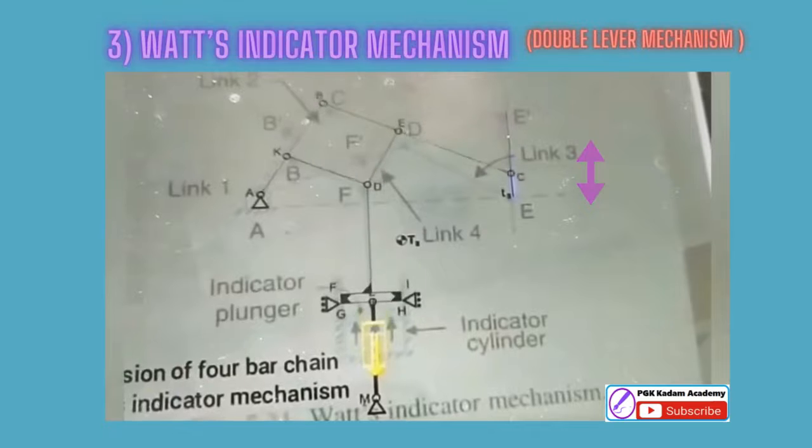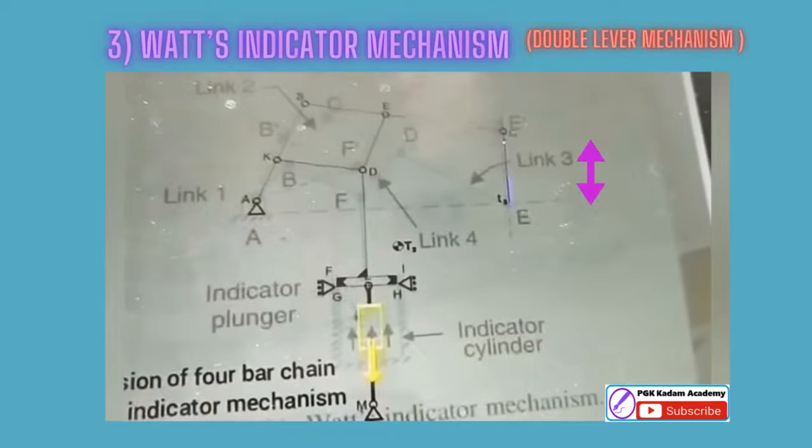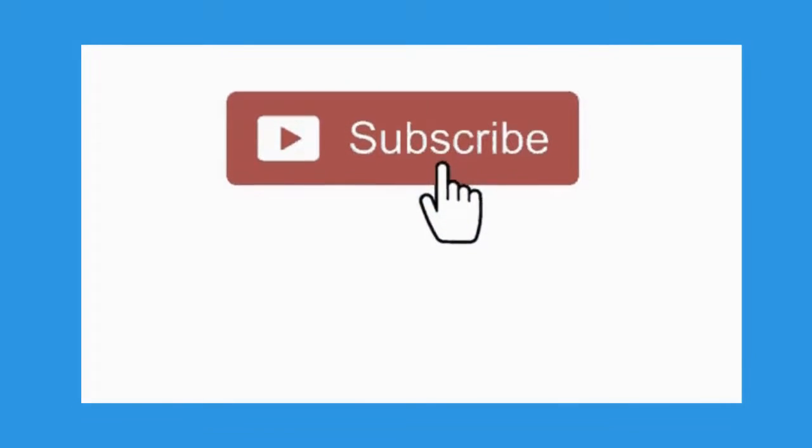The mechanism, also known as Watt's straight line mechanism or double lever mechanism, which consists of four links, is shown in the video. Thank you very much for watching full video.